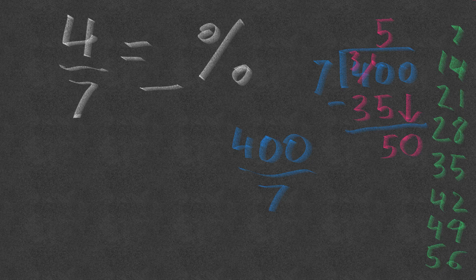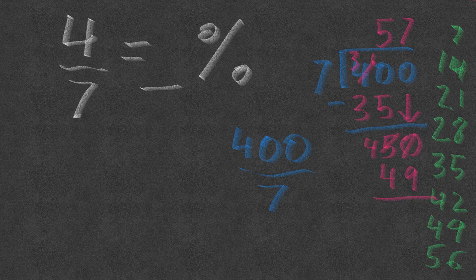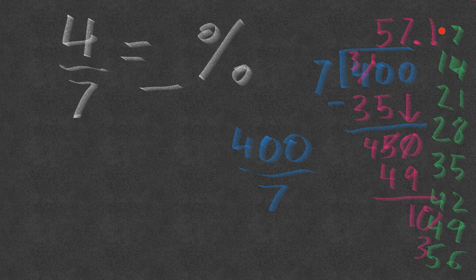The closest multiple of 7 to 50 is 49, which is seven groups of 7. So that gives 57 in the ones column. 50 take away 49 gives a remainder of 1, which becomes 10. That gives a decimal point and one tenth. I could carry on — that would give 4 with a remainder of 2, then repeating — but one decimal place is where I want to stop. So four sevenths is equal to 57.1%.